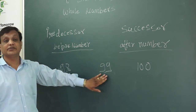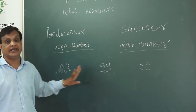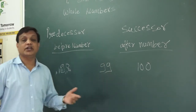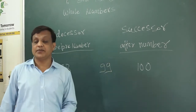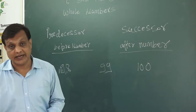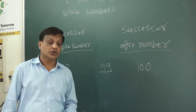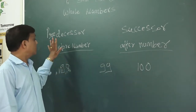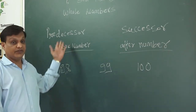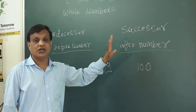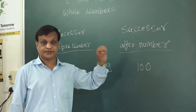If you subtract 1 from the given number you get 98. In this way, you can take so many examples and solve them at home. So predecessor means before number and successor means after number.